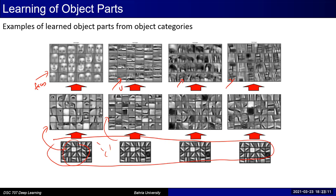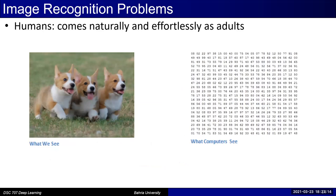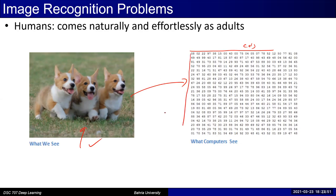Now let me introduce some basic knowledge of images, since we'll be applying CNN to images. As a human, you can recognize what's in an image without any effort. But for a computer, the image is actually a matrix of numbers with a certain number of rows and columns, which depend on the resolution. A high-resolution image has a very large matrix; a low-resolution image has a small matrix.